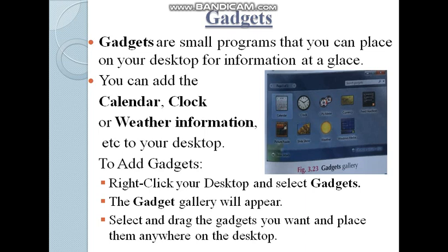Gadgets are small programs that you can place on your desktop for information at a glance. You can add the calendar, clock, weather information, pictures, etc. to your desktop. These are all things that you can use or view at any time, so you can place them on your desktop.